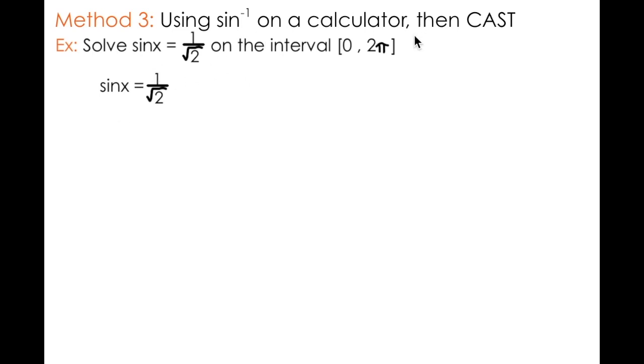However, be warned, you do still have to understand the CAST rule to find both solutions. So if we have the equation sine of x equals 1 over root 2, I can take the sine inverse of both sides in order to solve for x. You can think of it as the sine inverse and the sine cancelling out in order to leave x isolated, but remember what we do to one side we must also do to the other. So depending what type of calculator you have, when you take the sine inverse of 1 over root 2, you'll get either pi over 4 or you'll get 0.785.